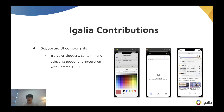I would like to share some of the key areas we've been working on. First, we focused on implementing various UI features such as the file chooser, color choosers, and context menus. We integrated these elements seamlessly into the existing Chrome iOS UI to ensure a consistent user experience.